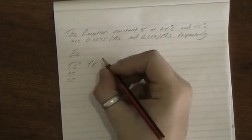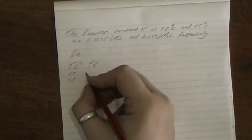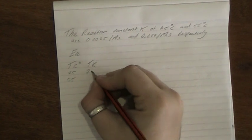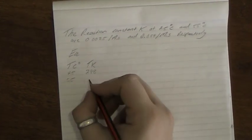So we need to know what the temperature is in Kelvin. Temperature in Kelvin is 25 plus 273 equals 298, and for 55 degrees is 328.